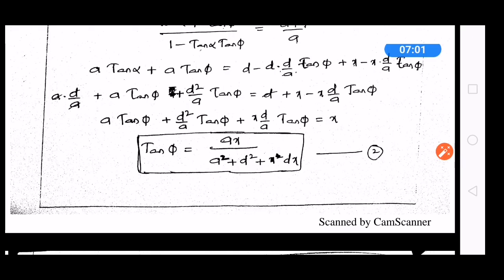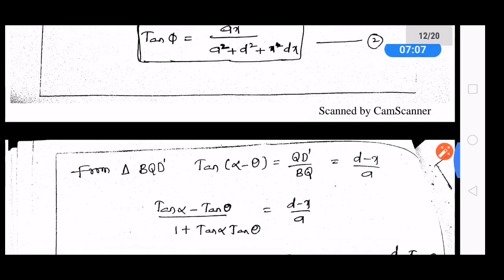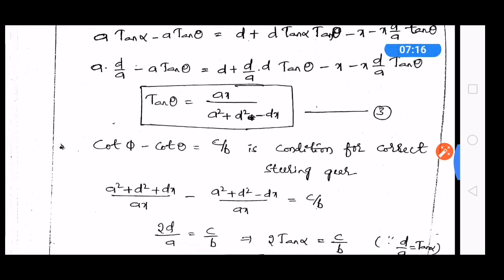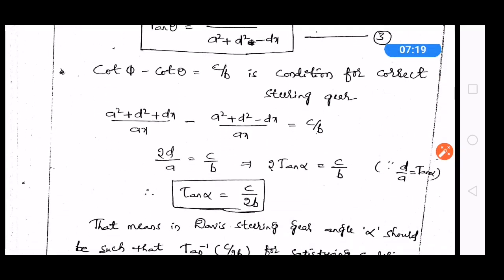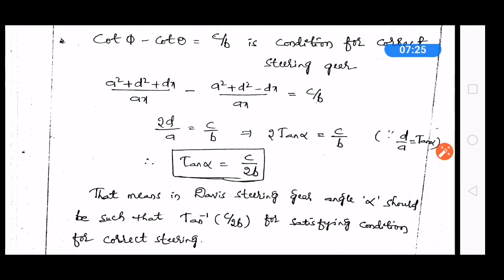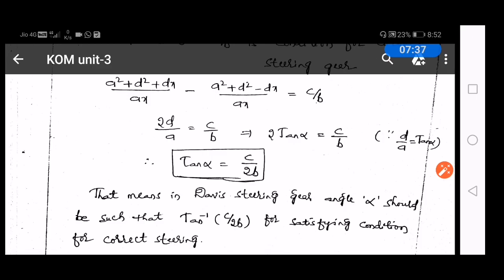Similarly, solving the left hand side of the wheel gives the same equation for tan(theta). If you substitute tan(phi) and tan(theta) into the fundamental equation — cot(phi) minus cot(theta) equals C divided by P — you will get the alpha angle: tan(alpha) equals C divided by 2B. If the Davis steering gear mechanism satisfies tan(alpha) equal to C by 2B, then it will satisfy the fundamental equation at every position.